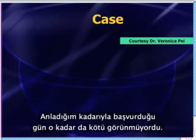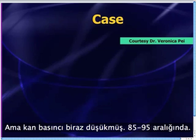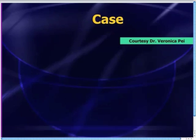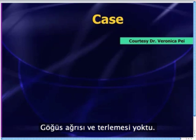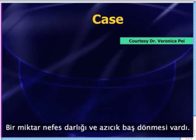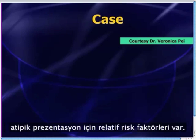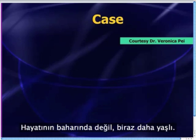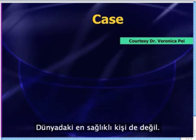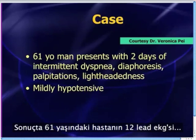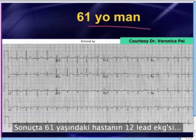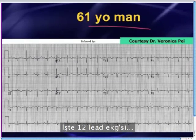On the day that he arrived, he wasn't actually looking that bad, but his blood pressure was a little bit low — maybe in the 85 to 95 range — but he didn't look that terrible. He didn't have any chest pain. He wasn't diaphoretic. He had maybe just a little bit of shortness of breath and was slightly lightheaded. Now, he's 61 years old, not diabetic, but he still has a relative risk factor for atypical presentation in that he's a little bit older and maybe not in the best health. So she got a 12-lead EKG on this guy, and here is the 12-lead EKG.